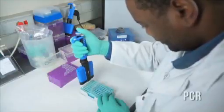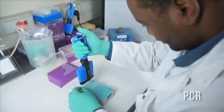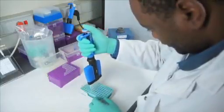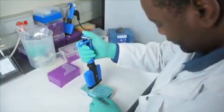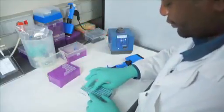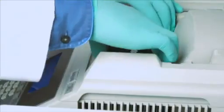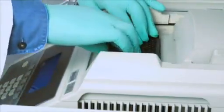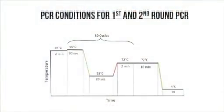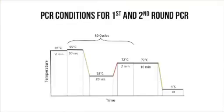Add 2 microliters of the cDNA to 23 microliters of the first round PCR master mix. Close the tubes, put the samples in the thermocycler and run the PCR program. Continue to second round PCR stage or store the first round PCR products at minus 20 degrees Celsius or colder until required.